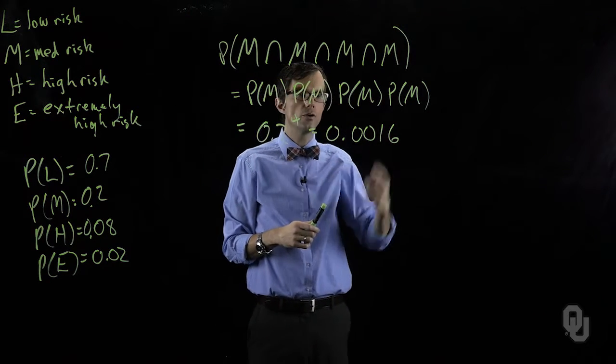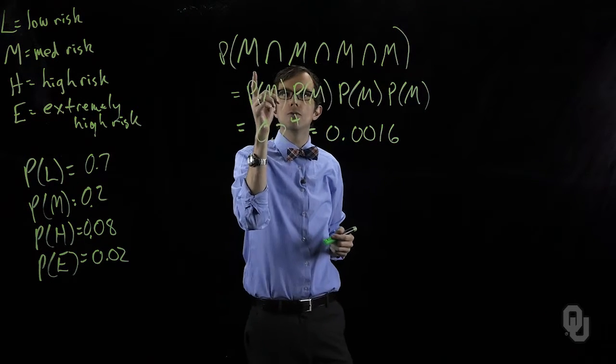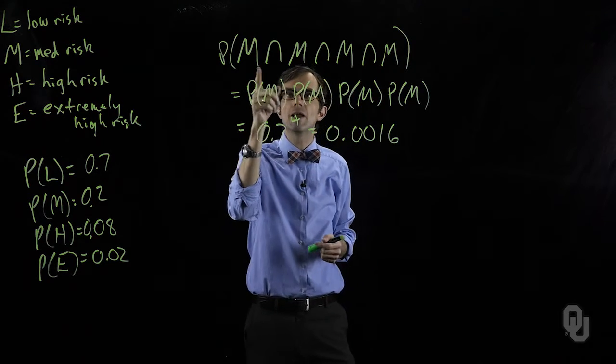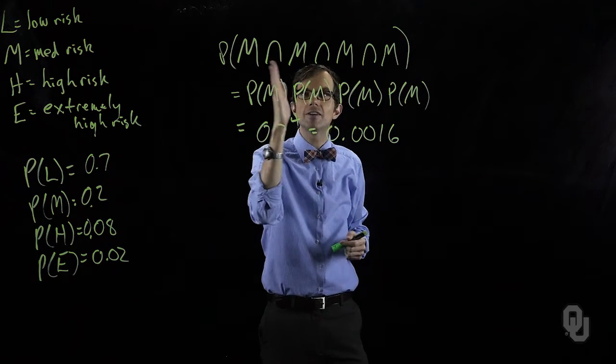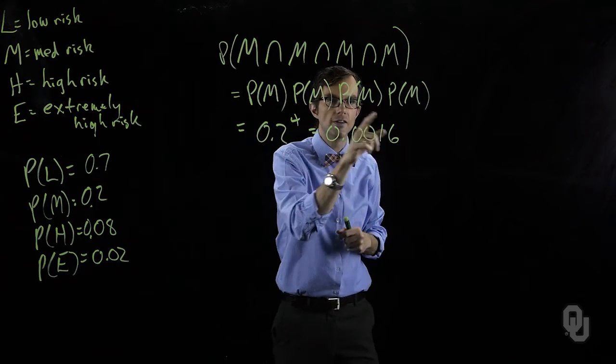This should make some intuitive sense. There are four different things that could occur and we're being very specific about each one of those four things. Every time we're more and more specific, this probability gets less.